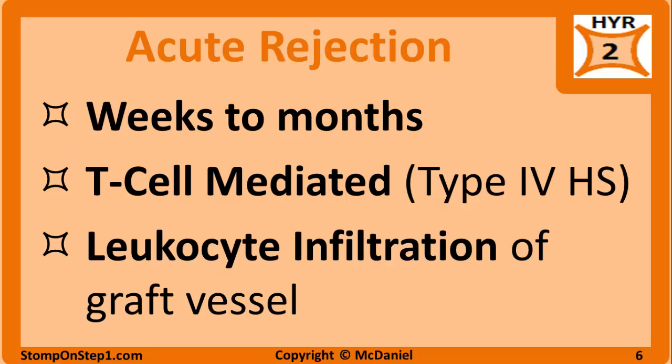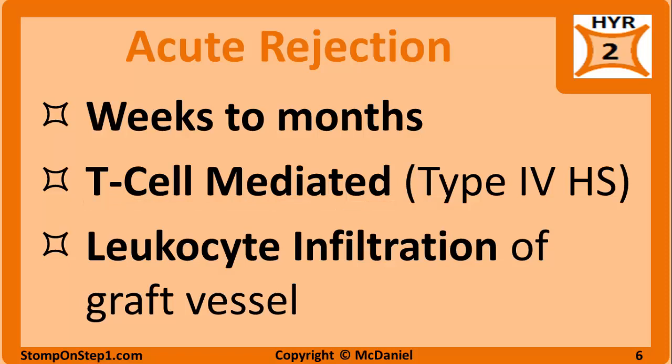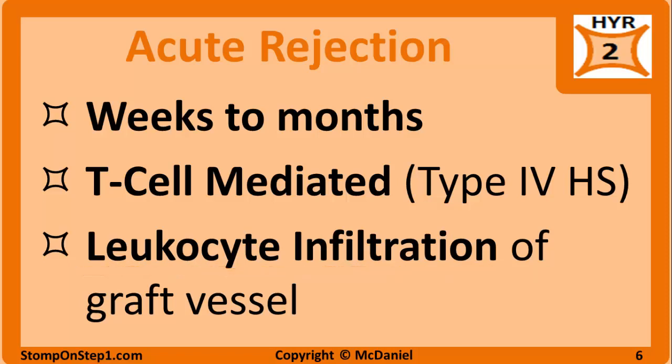Acute rejection is the most common type of transplant rejection. It usually has an onset between weeks and months after transplantation. It is a T cell-mediated response against the foreign MHC in the donated organ, making it an example of type IV hypersensitivity or delayed-type hypersensitivity. This process results in leukocyte infiltration of the graft vessel, which can be seen on biopsy. The risk can be diminished with prophylactic immunosuppression, and if identified early, it may be treatable with immunosuppressants and corticosteroids.